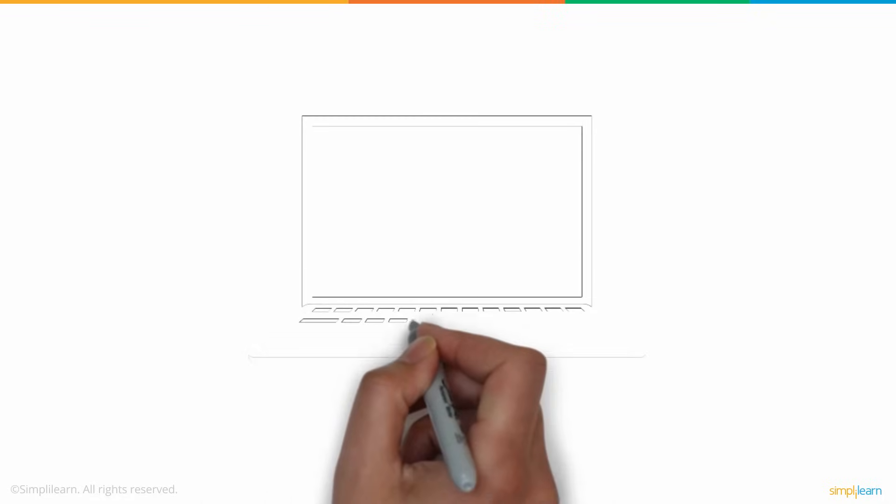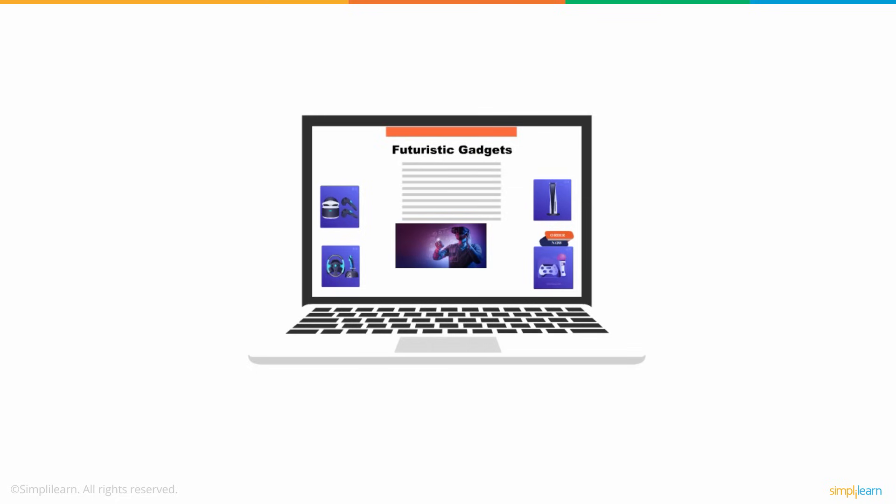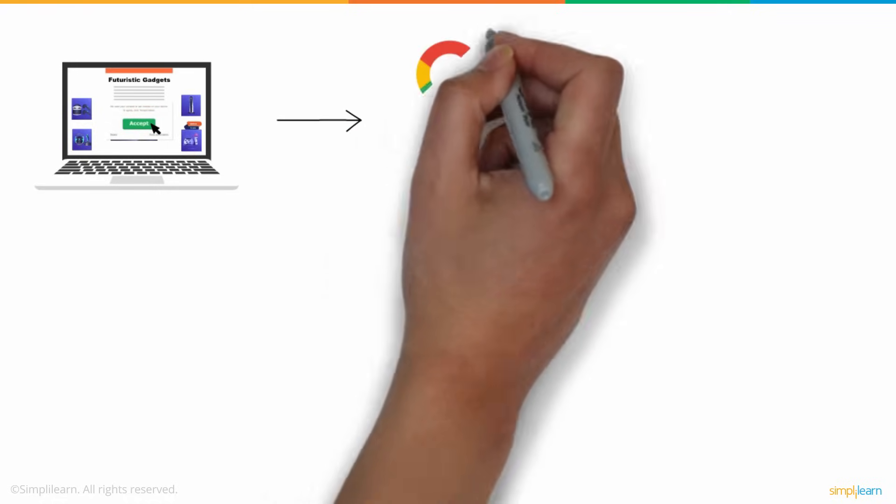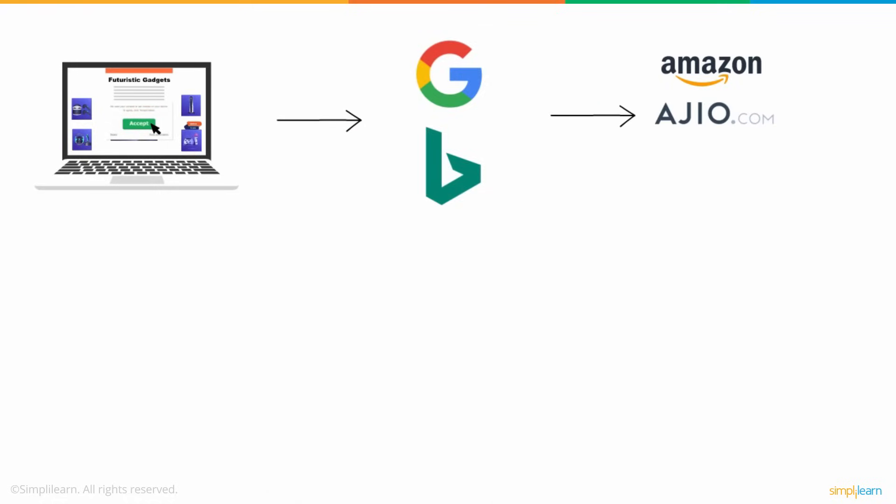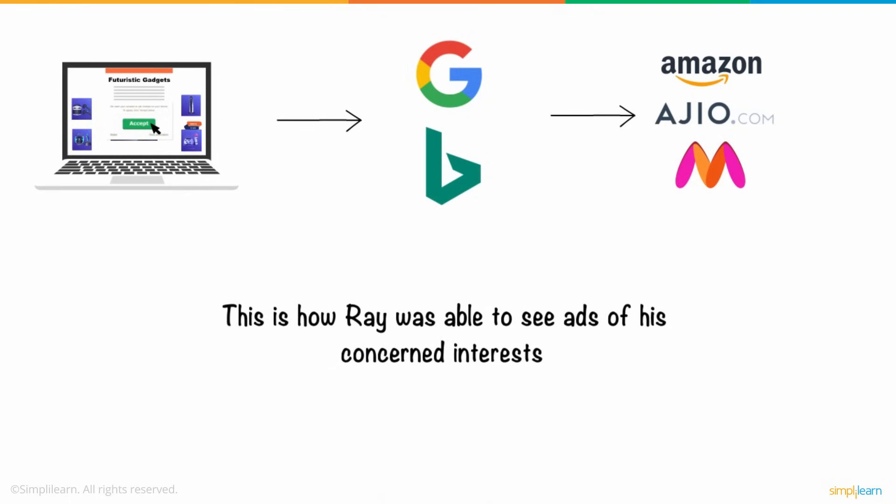He further added that when we seek out information or data of any kind from any web platforms present on the internet, simultaneously unknowingly, we also provide them with information related to our choices and interests, which are stored in cookies, which later they sell to various companies who make use of this data to advertise exactly what you are looking for. And this is how Ray was able to see ads of his concerned interests.